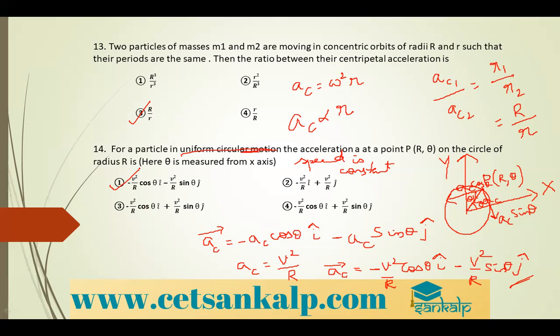To summarize: the object is at point P at coordinates (r, θ). The acceleration components split into a·cosθ and a·sinθ. The vector a equals minus signs because the components are opposite to both the x-axis and y-axis directions respectively.